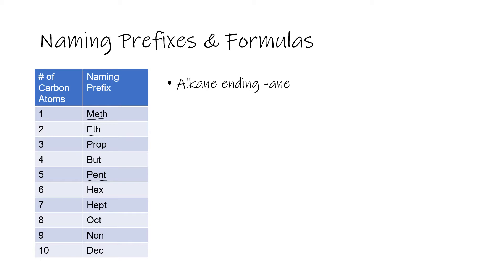Let's look at the very simplest alkane. An alkane has all carbon-carbon single bonds, and the names all end in '-ane', which tells us it is an alkane. The simplest alkane is methane, where 'meth' tells us it has one carbon. Carbon makes four bonds, so it bonds to four hydrogens. This is the expanded structural formula for methane.